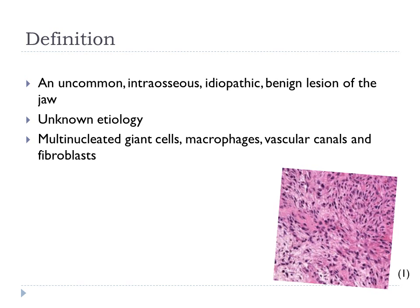This lesion has been thought to be due to a reactive process within the bone, but it has a lack of supporting research to be a definite etiology. Therefore, the etiology is unknown. When viewing Central Giant Cell Granuloma histologically, multinucleated giant cells populate its vascular canals and fibroblasts are present within the connective tissue.